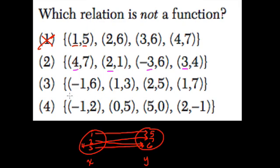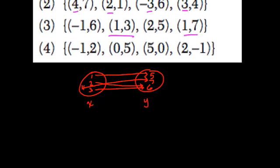And the only case it happens in is choice 3 with these two points: (1,3) and (1,7). And if you think about what's happening, what this means is that the input 1, if you start there,